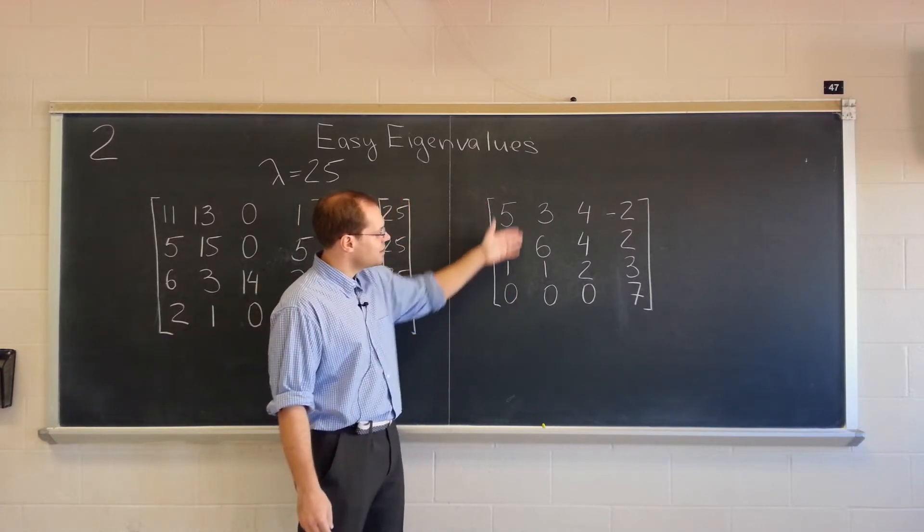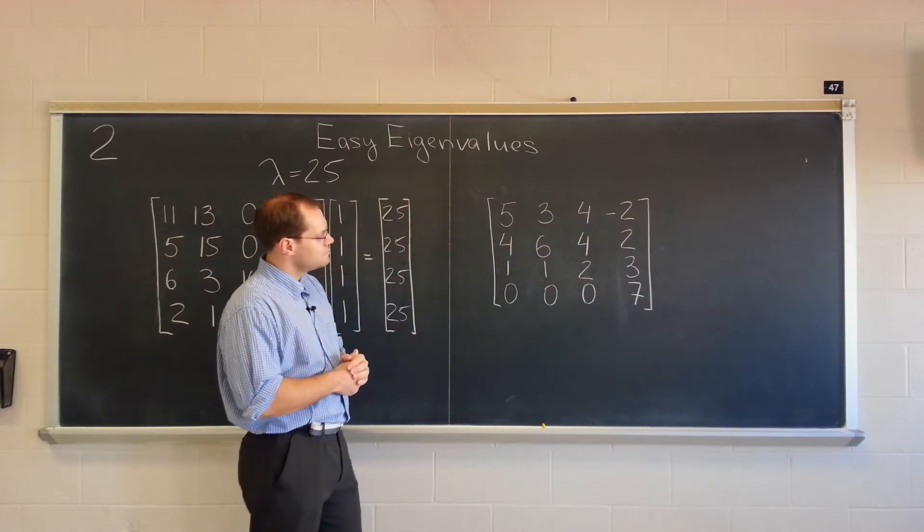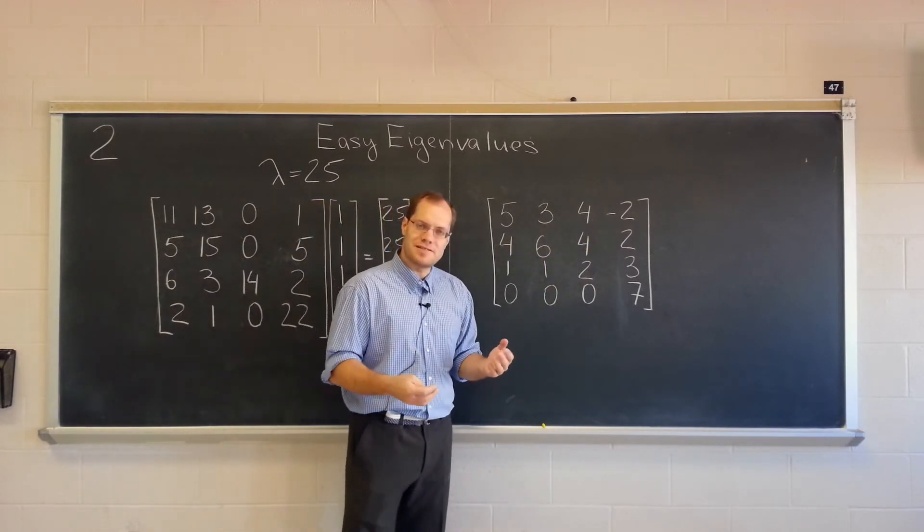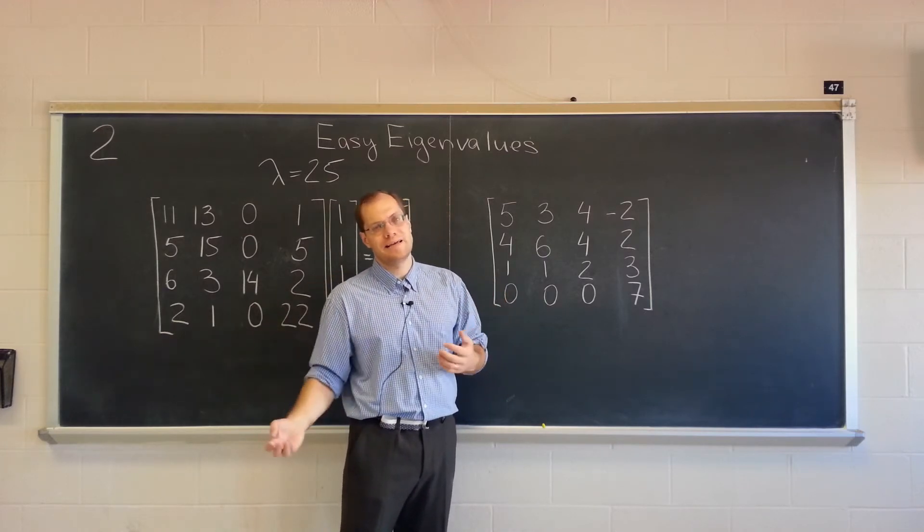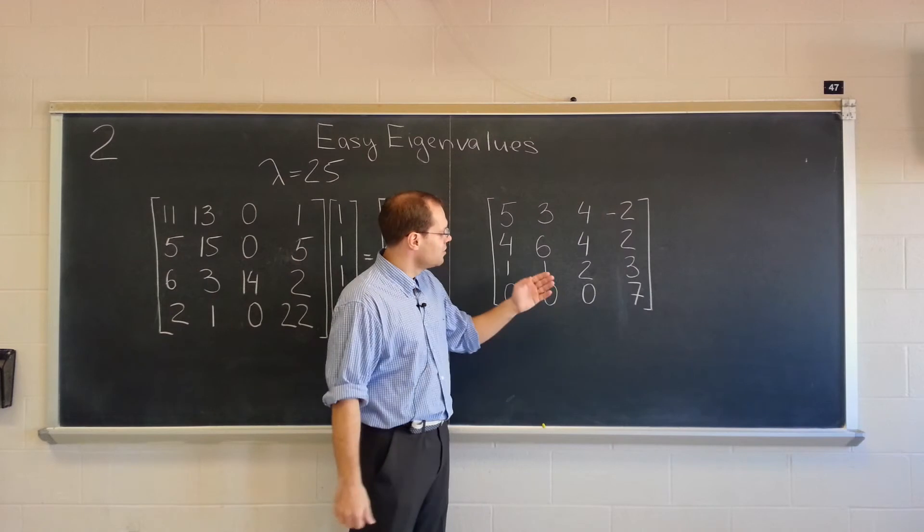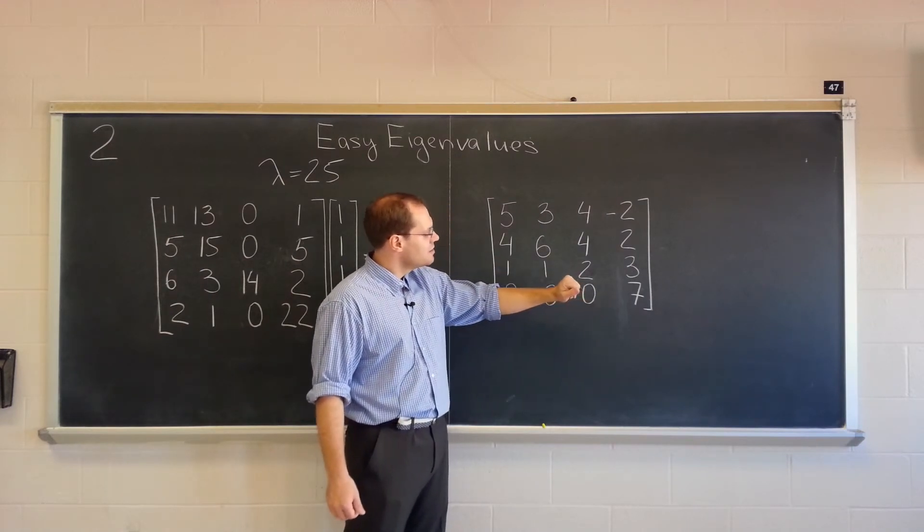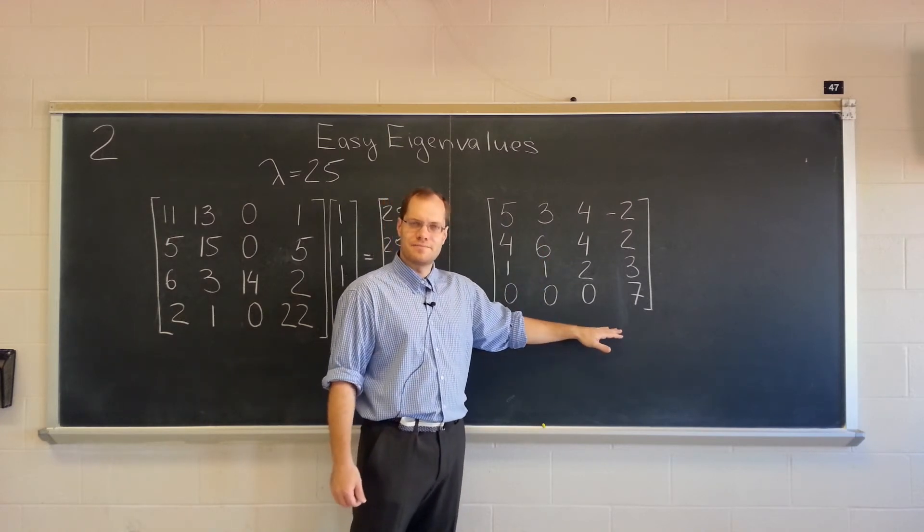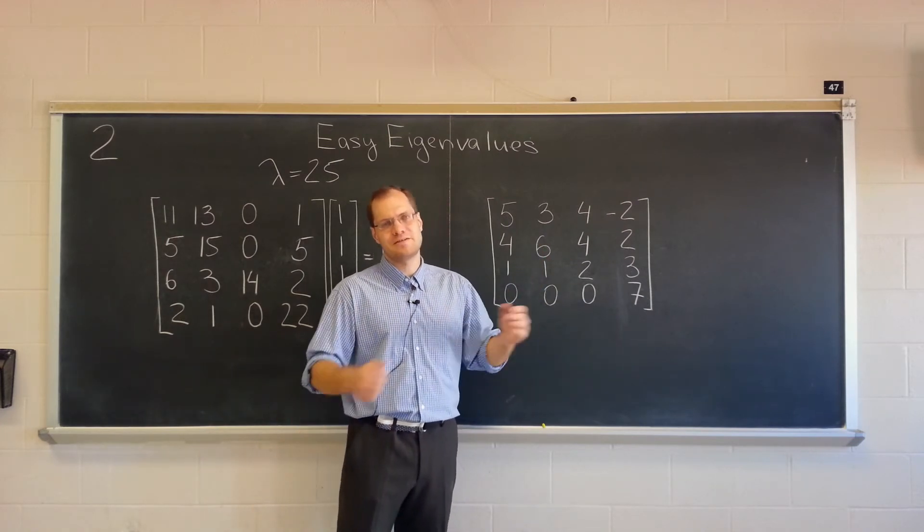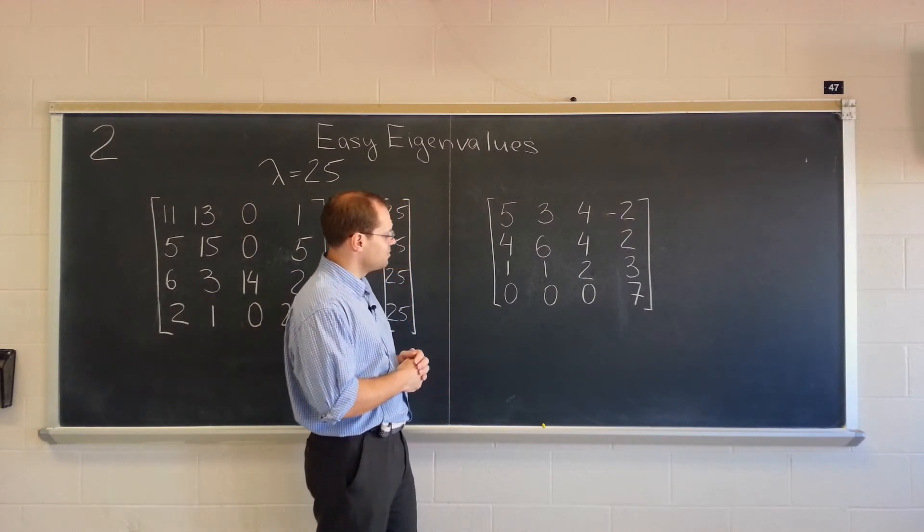And here, every column adds up to 10. So when every column adds up to 10, once again, because the matrix and its transpose have identical eigenvalues but generally different eigenvectors, you can conclude that this matrix has an eigenvalue of 10. But for the corresponding eigenvector, once again, you have to perform the tail end of the eigenvalue procedure.